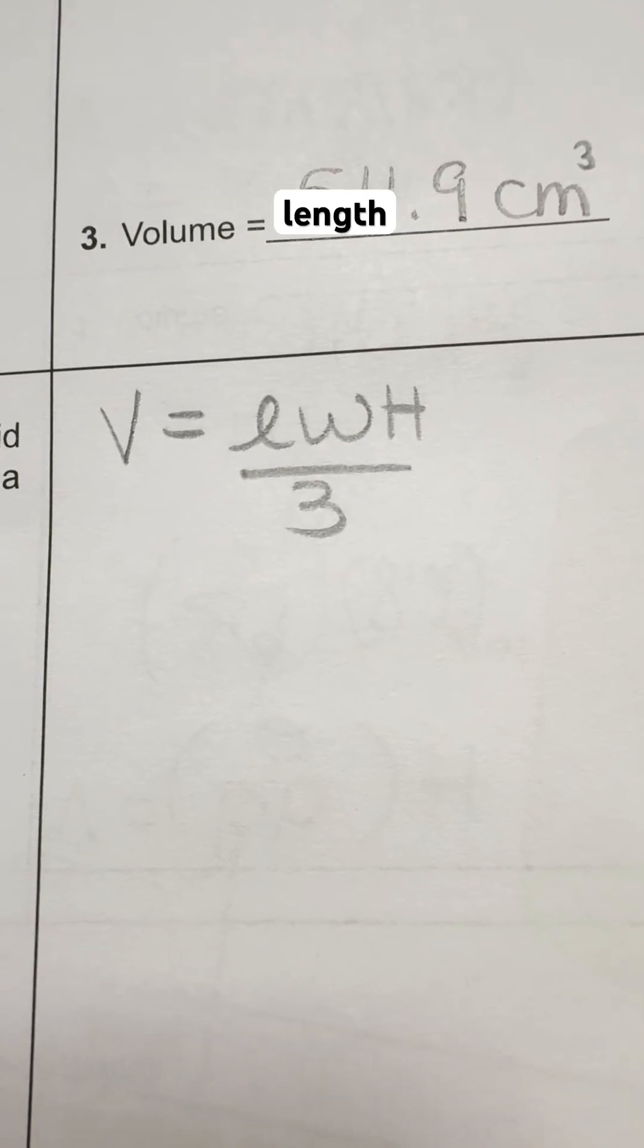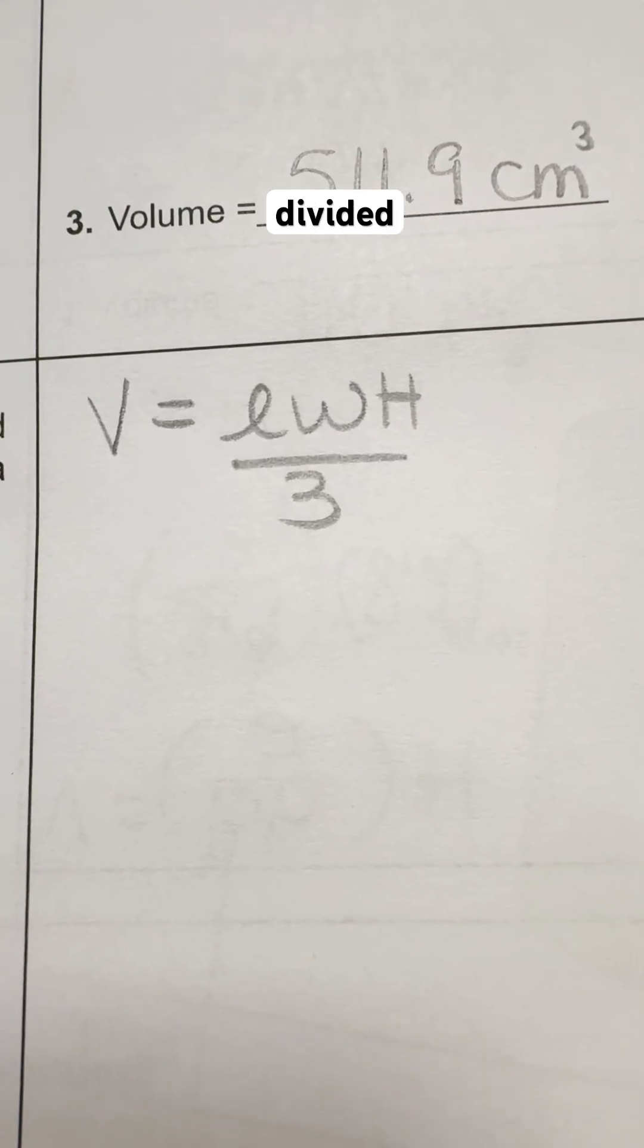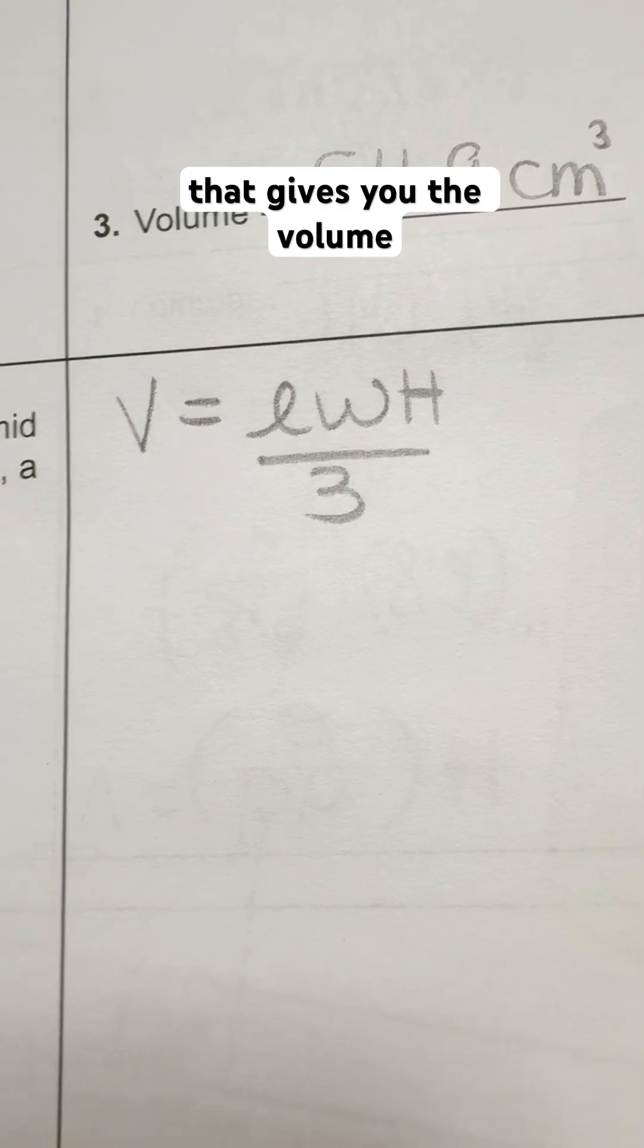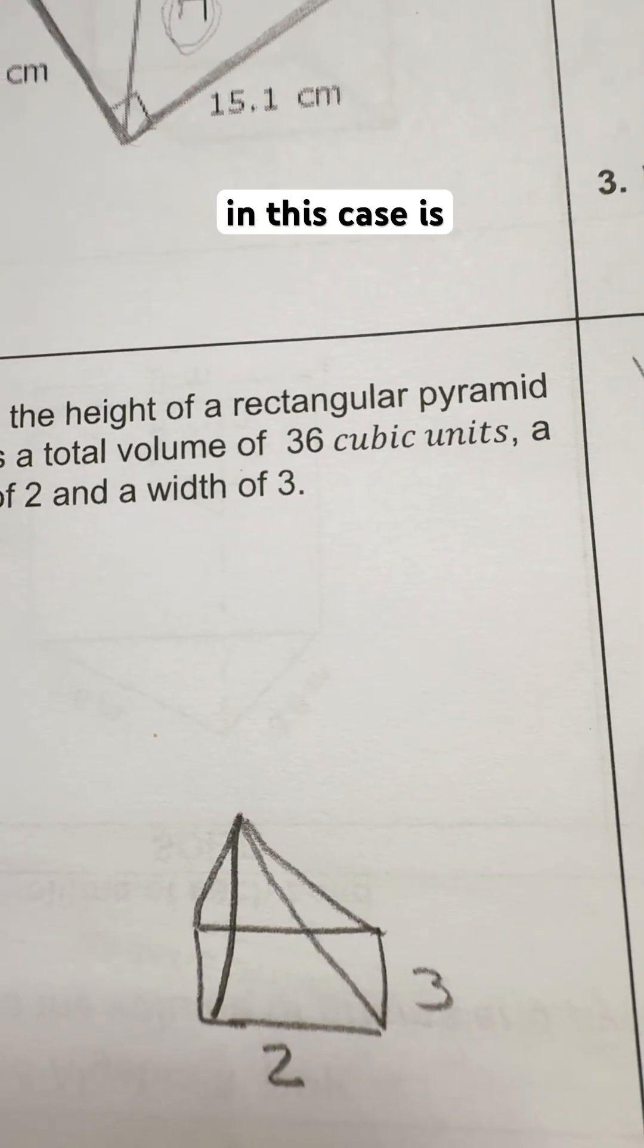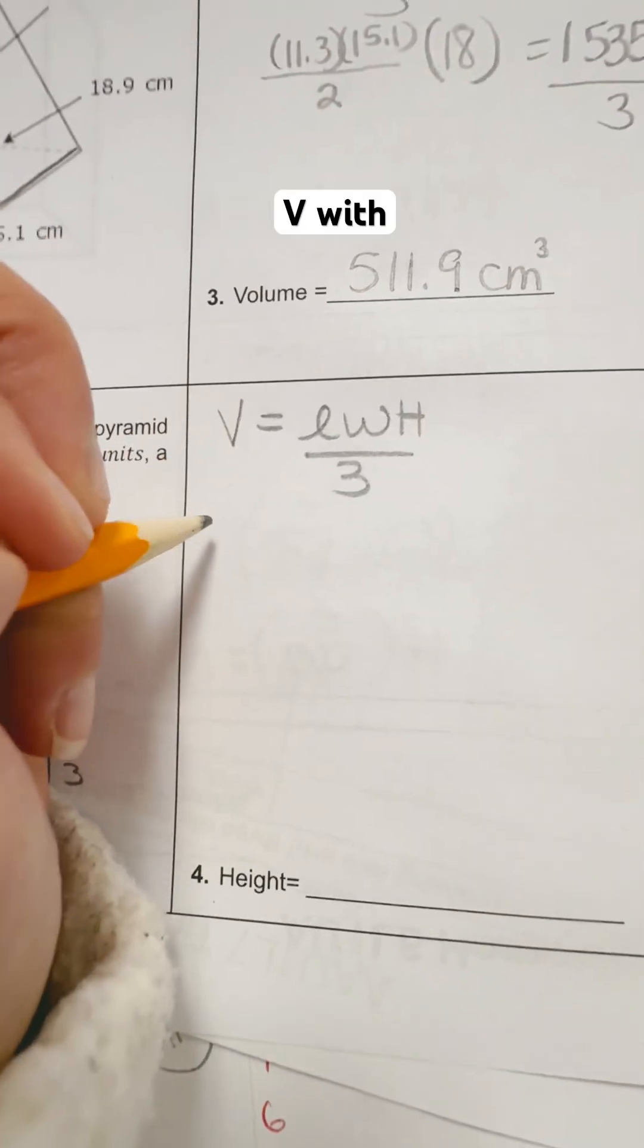So what I have is the formula: length times width times height, divided by 3, and that gives you the volume. Now I have the volume, in this case it's 36, so I'm going to replace the V with 36.